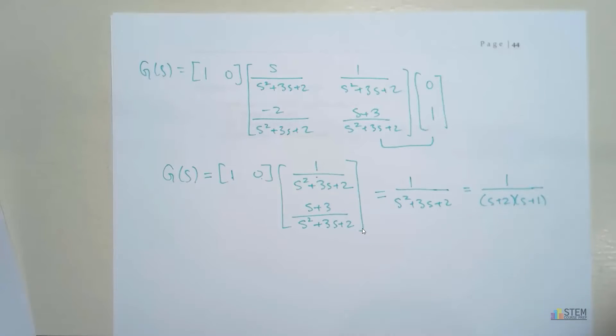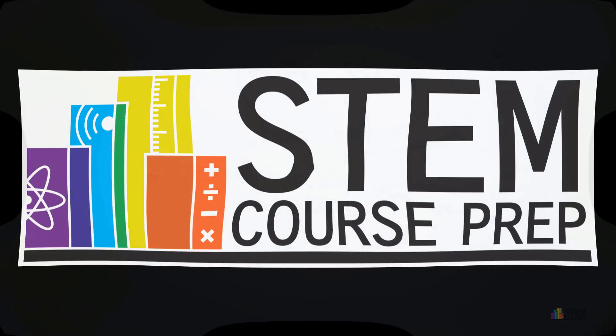And then this is going to give us our transfer function. So that's your g(s). We took that state-space equation and converted it over to a transfer function. So there you have it. That is the end of chapter 3. We'll see you guys next time.